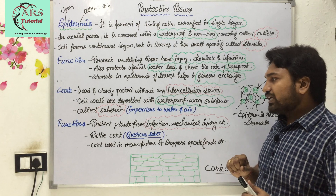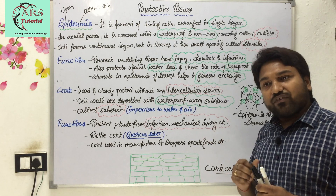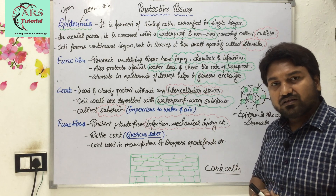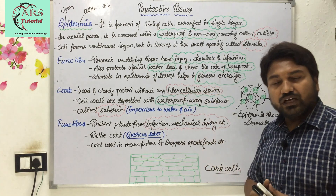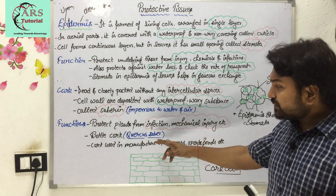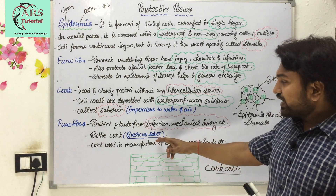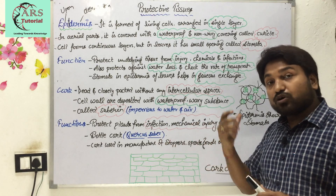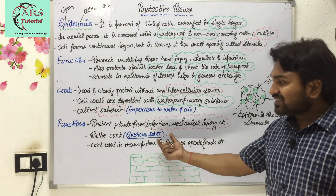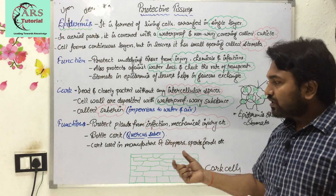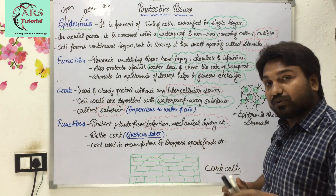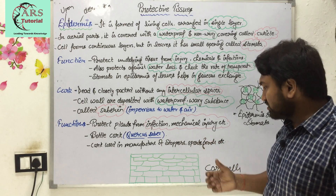The function of cork is to protect the plant from infection, mechanical injury, etc. — the same as the function of epidermis. Bottle cork is derived from the plant Quercus suber. Cork is used in the manufacture of stoppers, sport goods, and similar products.